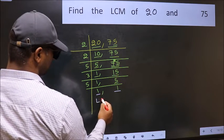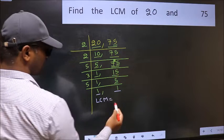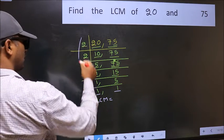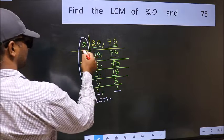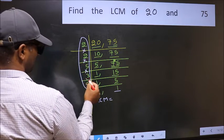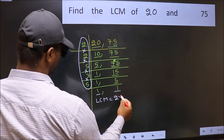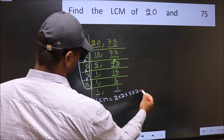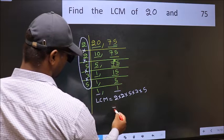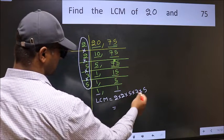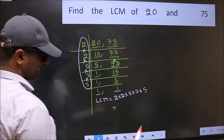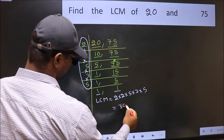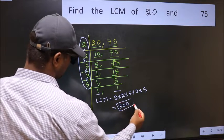So our LCM is the product of these numbers. That is 2 into 2 into 5 into 5 into 3. When we multiply these numbers, we get 300 as our LCM.